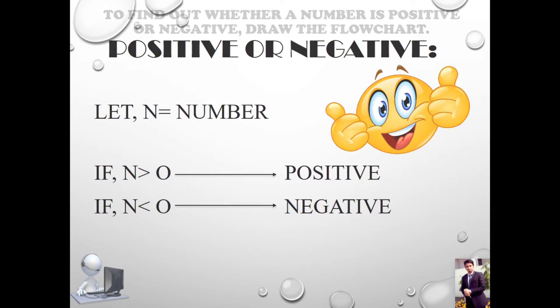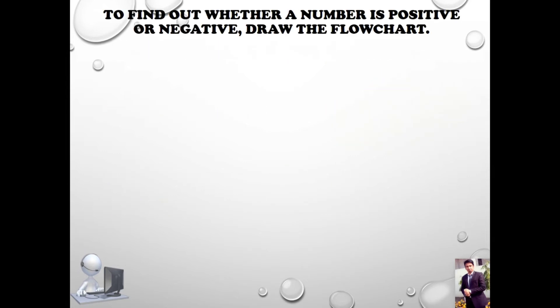Let's see the flowchart to find out whether a number is positive or negative. First, you have to start with an oval shape, then you have to draw a parallelogram shape.